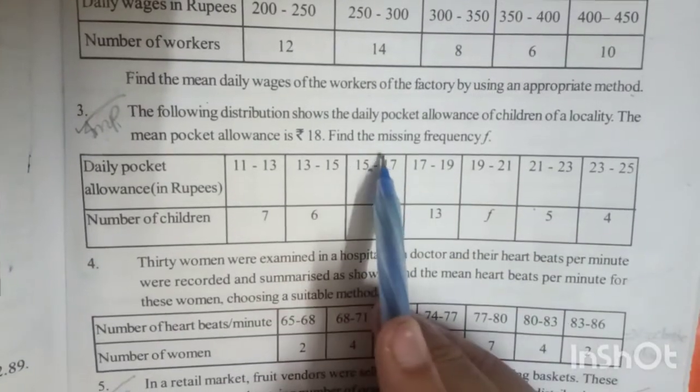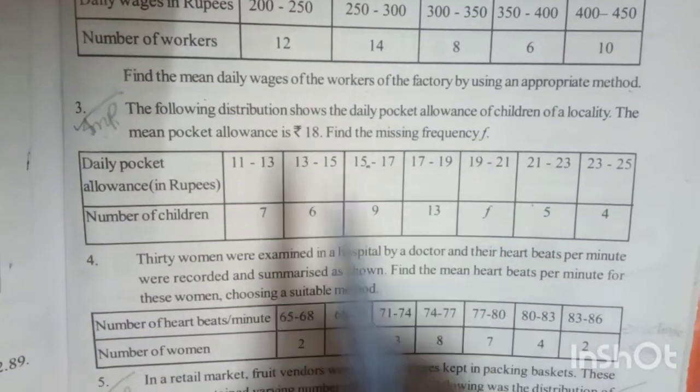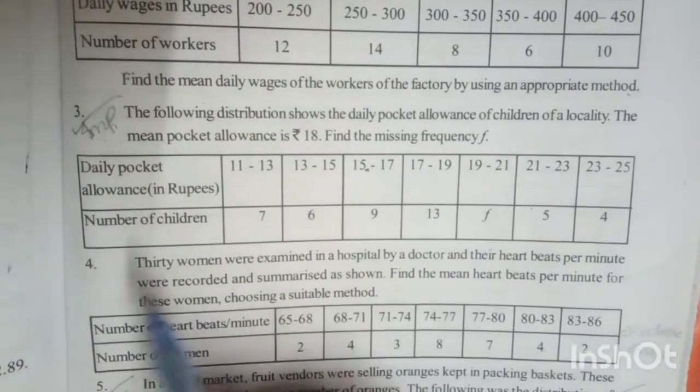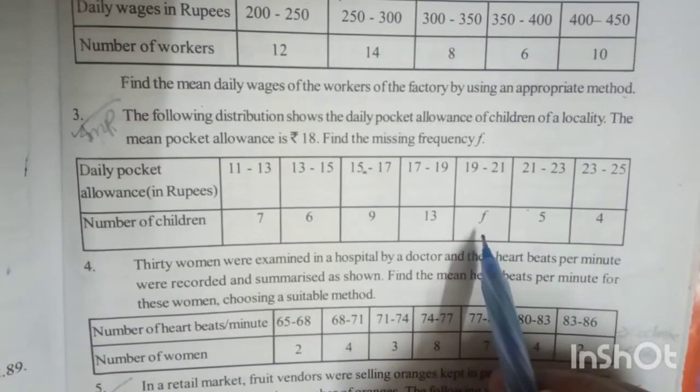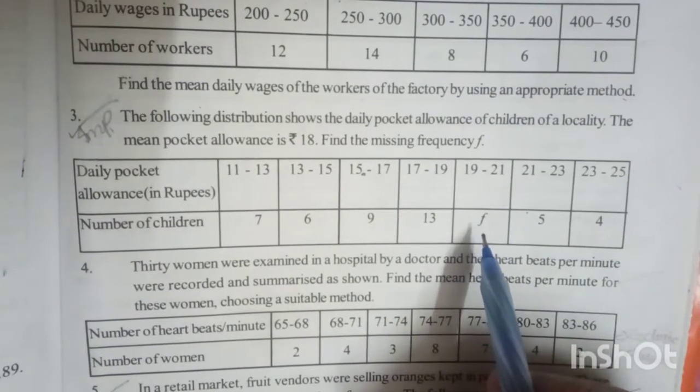They have given us the class intervals and the frequency, as well as the mean of the data. So we have to find the missing digit which is represented here by the letter f.